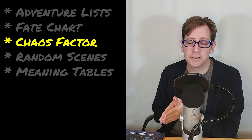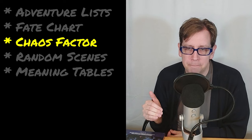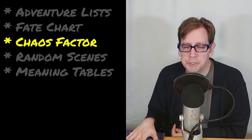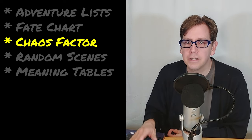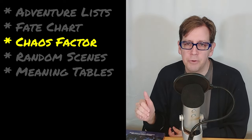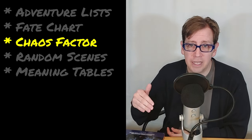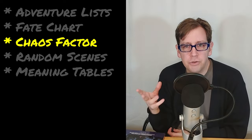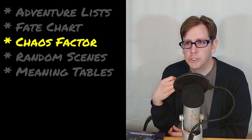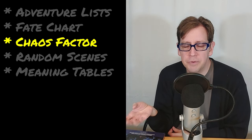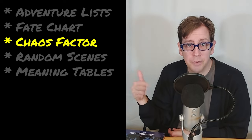Finally, adjust your chaos factor — it goes up by one or down by one. The standard recommendation is: if the characters were in control of the scene, chaos goes down by one; if the characters were not in control, chaos goes up by one. If you're not sure, think: do I want more random events or fewer random events in the next scene? Use that to guide your decision.